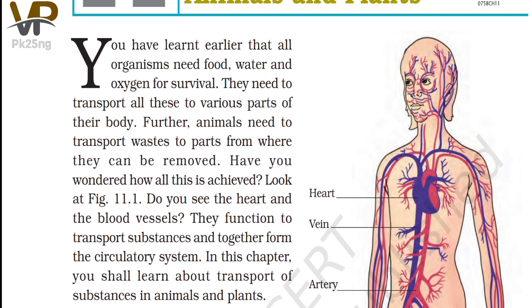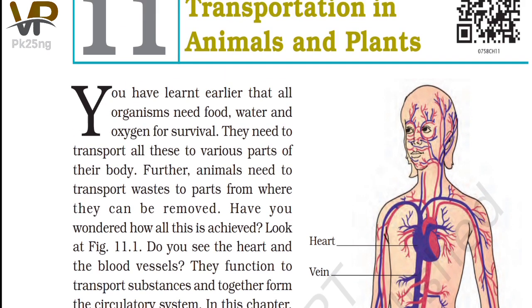You see two different kinds of pipes. One kind of pipe is known as artery, and the second kind of pipe is known as vein. So what actually are arteries and veins? Arteries are pipe-like blood vessels.